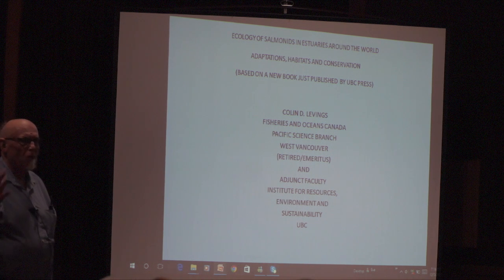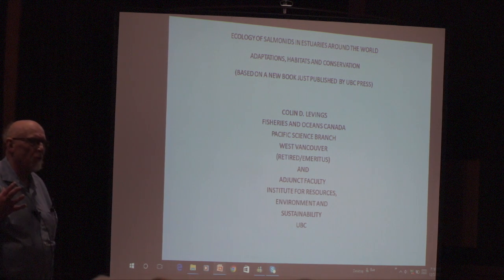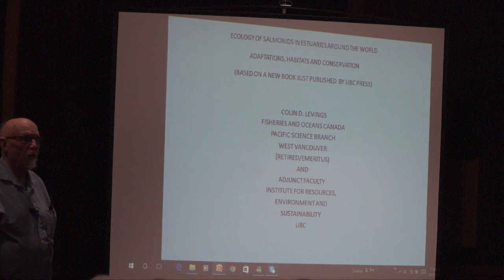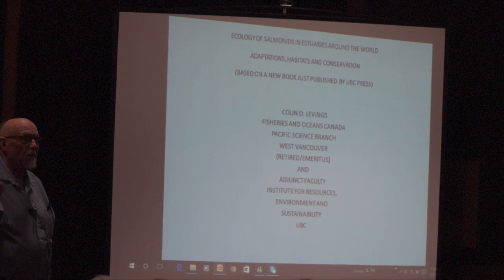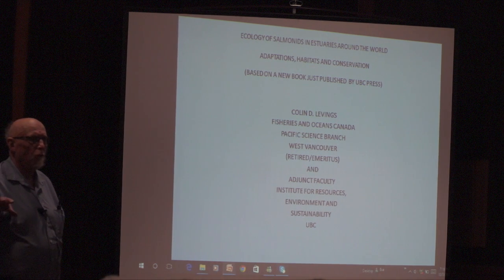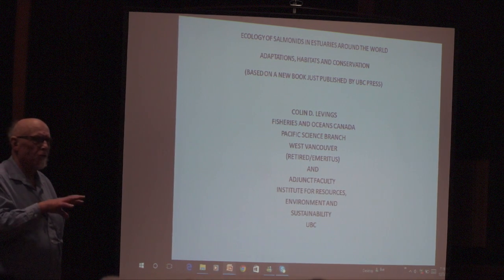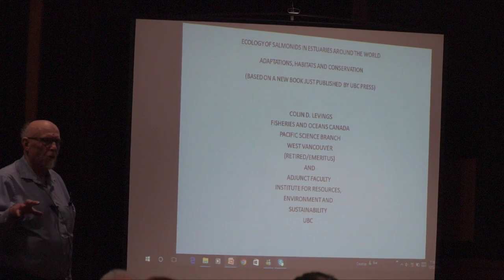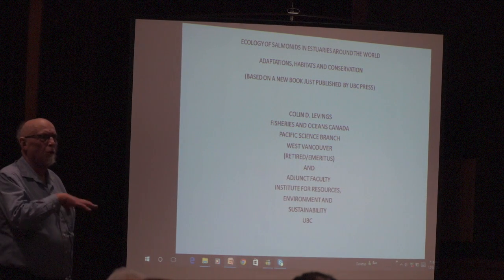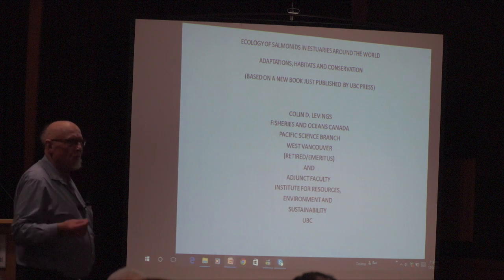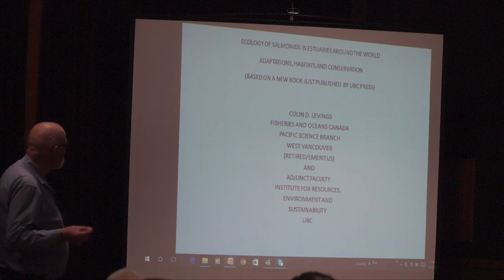Now what are salmonids? We think of salmon, but there's a big family called Salmonidae — actually a sub-family — and there are 18 species of them that live in the ocean as well as fresh water. That is, they're anadromous: they go into the ocean and then go back to fresh water to spawn. That's what I mean when I say salmonids.